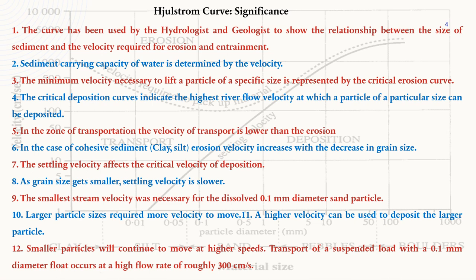Sand particles with a minimum diameter of 0.1 millimeters require the smallest stream velocity for deposition. Larger particle sizes require more velocity to move. A higher velocity can be used to deposit larger particles. Smaller particles will continue to move at higher speeds. Transportation of a suspended load with a 0.1 millimeter diameter occurs at a high flow rate of roughly 3 centimeters per second.